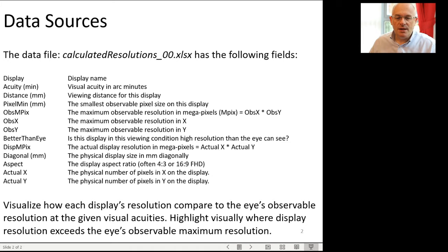You should find in the file a better than eye flag, which gives you a flag for that. But it'd be interesting to see which ways you can find to visualize that from this dataset.